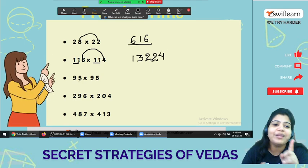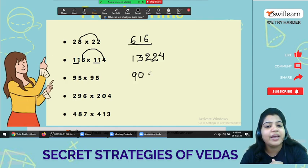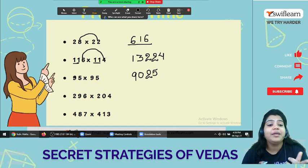Now this one is the easy one. 95 times 95. 9 and the next number, 9 times 10 is 90 and in the last 25, 5 times 5 is 25.